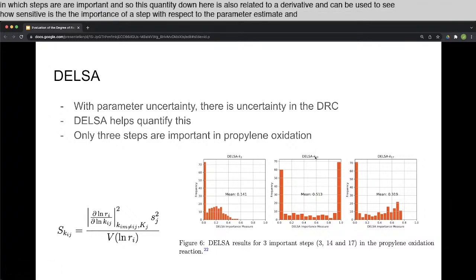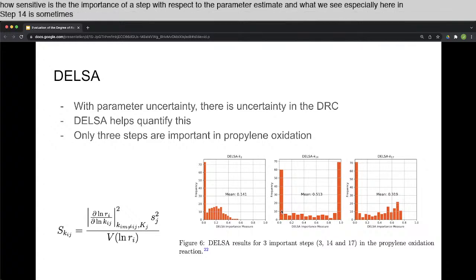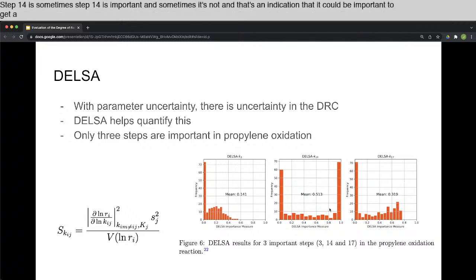And what we see, especially here in step 14, is sometimes step 14 is important and sometimes it's not. And that's an indication that it could be important to get a more accurate measurement of the parameters associated with step 14, and automatic differentiation made it easy to get to that analysis.